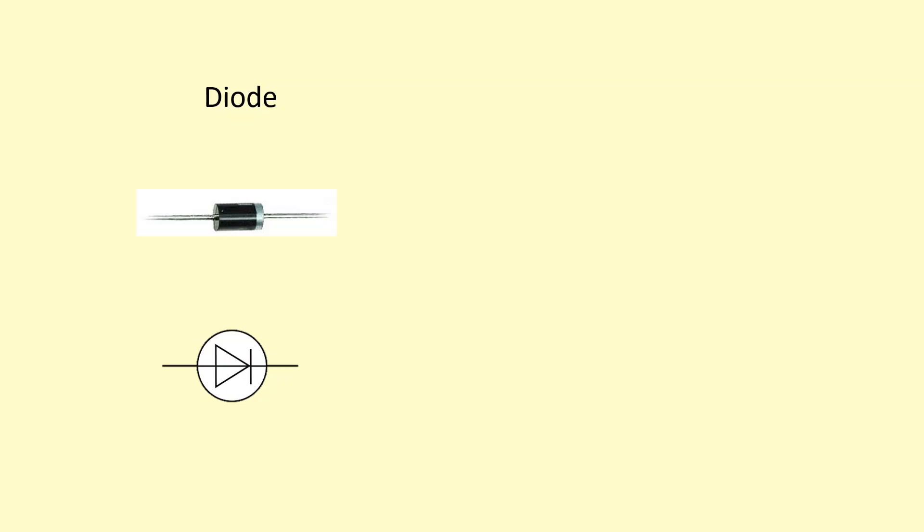This component is a diode. It lets current flow in one direction. To be specific, it lets current flow in this direction. And if you try to make current flow in the other direction, the resistance will be very high and it won't let the current flow.